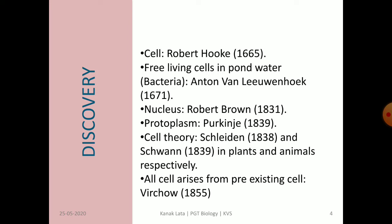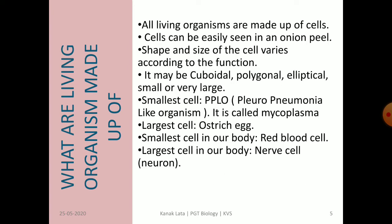Nucleus was discovered by Robert Brown in the year 1831. Purkinje in the year 1839 discovered protoplasm. Cell theory was given by Schleiden in 1838 in plants and by Schwann in 1839 in animals. Virchow in the year 1855 gave the statement that all cells arise from pre-existing cells. All living organisms are made up of cells.